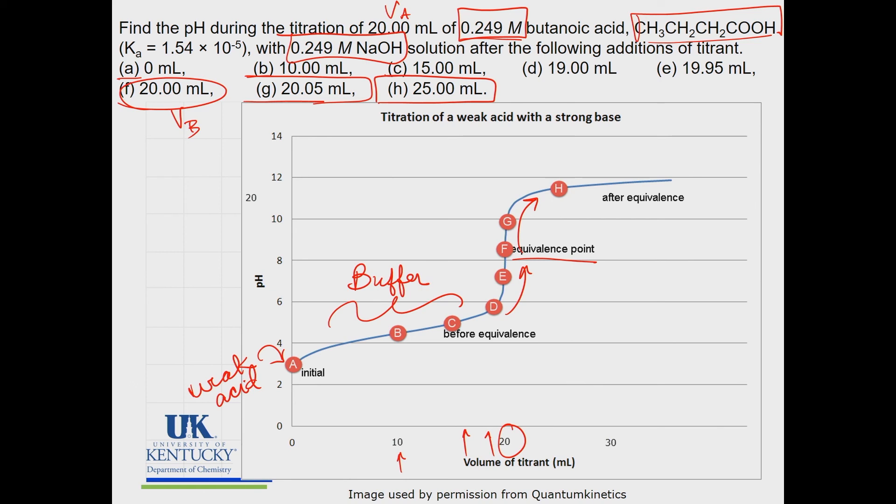And then it will just steadily and slowly climb as you keep on adding a little bit more base. pH is a base 10 scale so it doesn't climb really rapidly like you think it might. Because of that log base 10 it is a slow climb as you go forward from there.